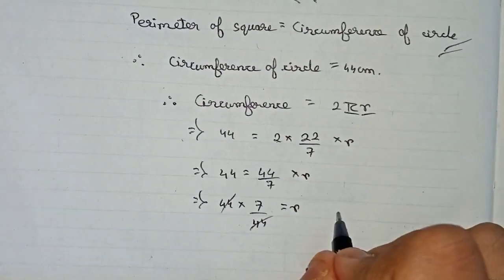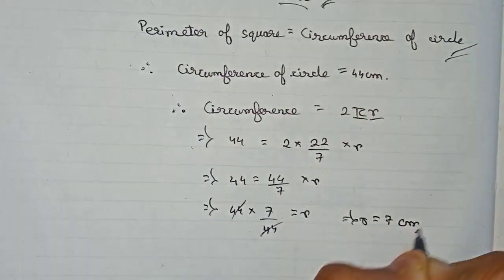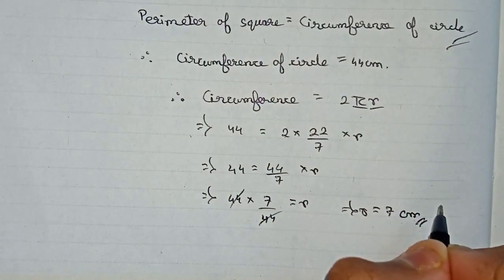44 and 44 cutting out, so r is equal to 7 centimeter. So from this you can easily find out the area. So therefore, area of circle...